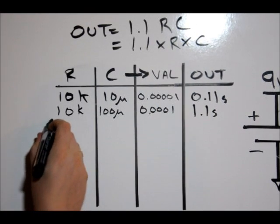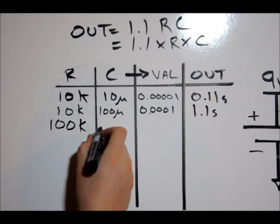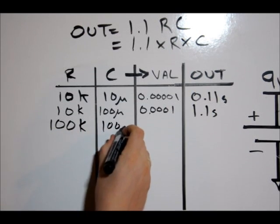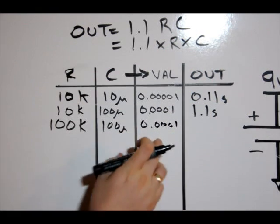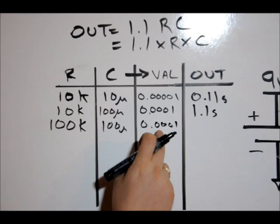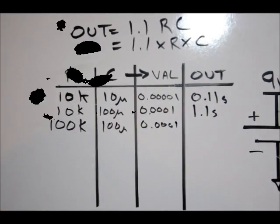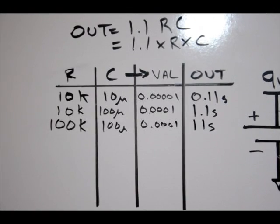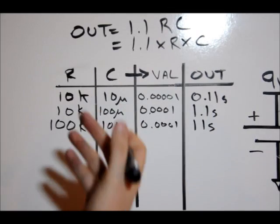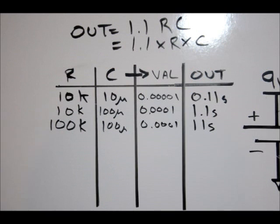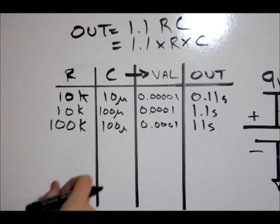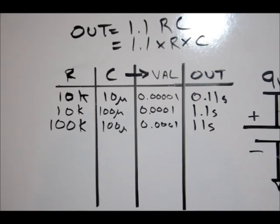What if we change our R value to 100k and leave our capacitor at 100 micro? And we multiply this times this times 1.1. What do we get? We get 11 seconds. So you can keep making this table. Again, it's very easy. It's three multipliers. Your resistor, your capacitor, times 1.1. So what we would do is we just need to plug those values into our RC network at pins 6 and 7, and we're off. So let's go and put this on a breadboard.